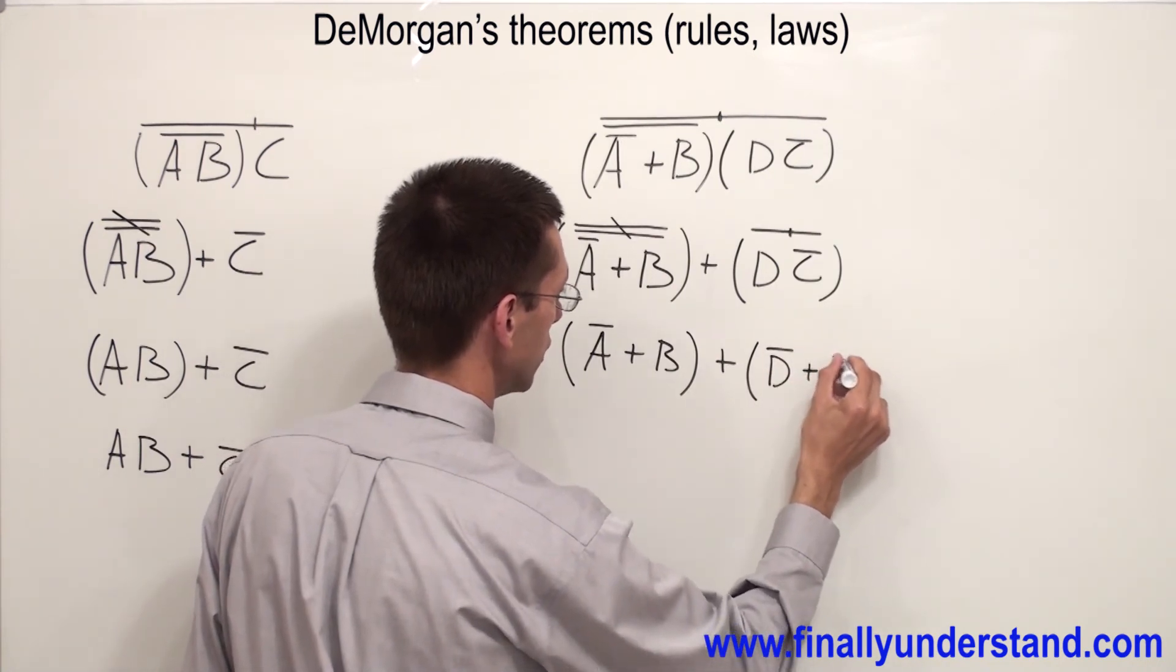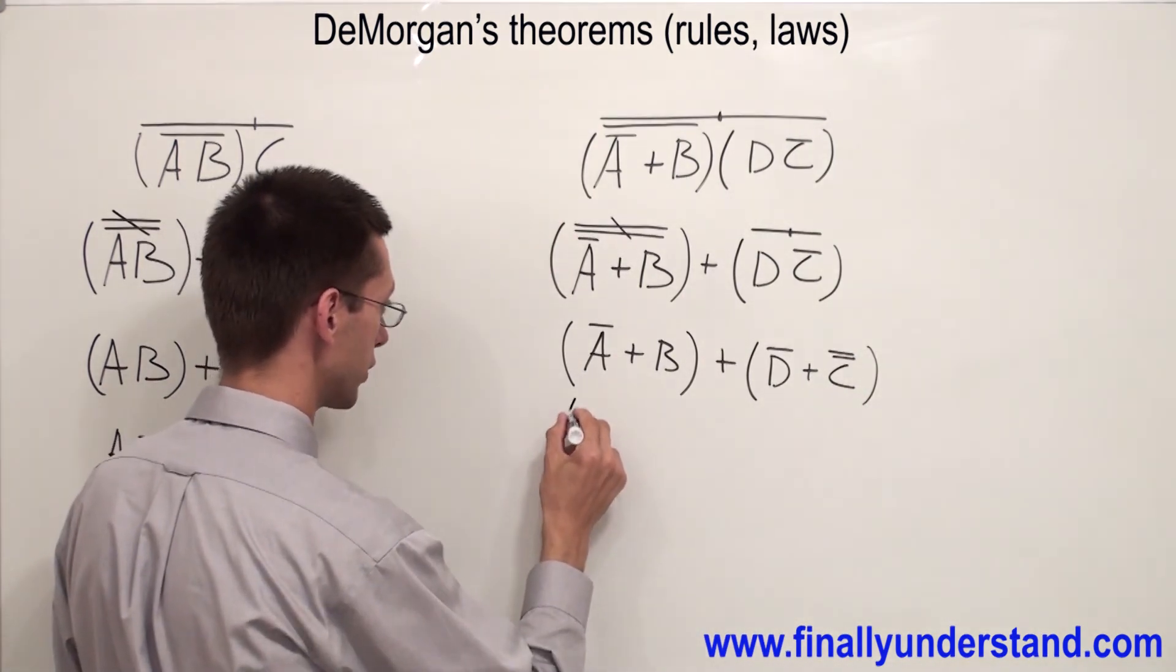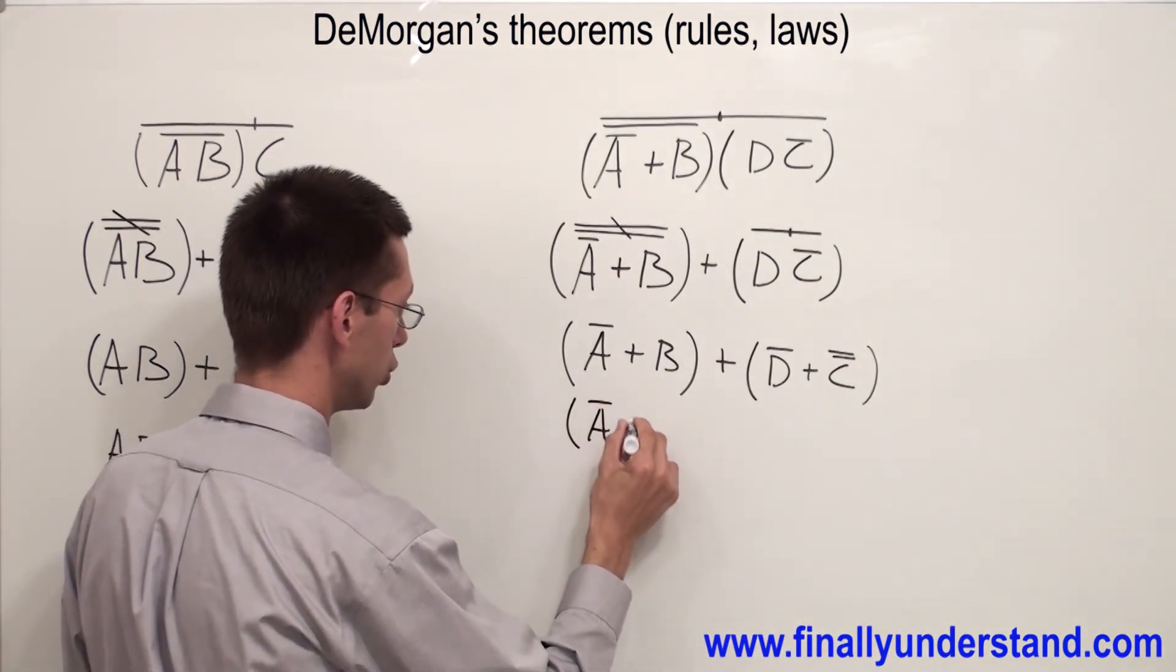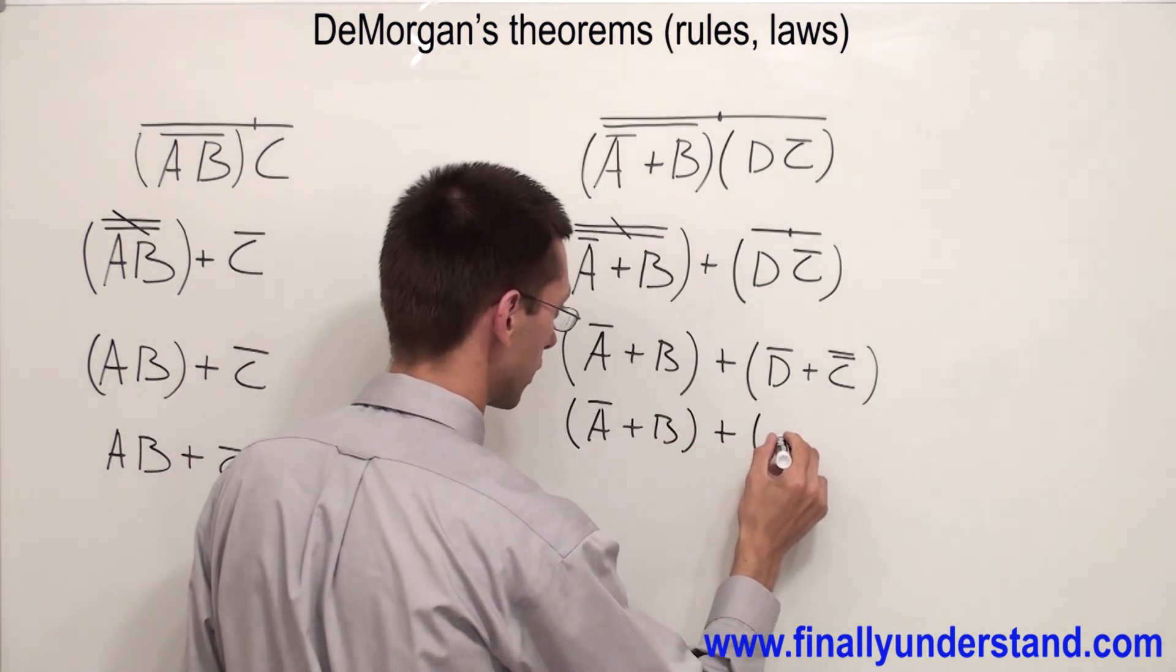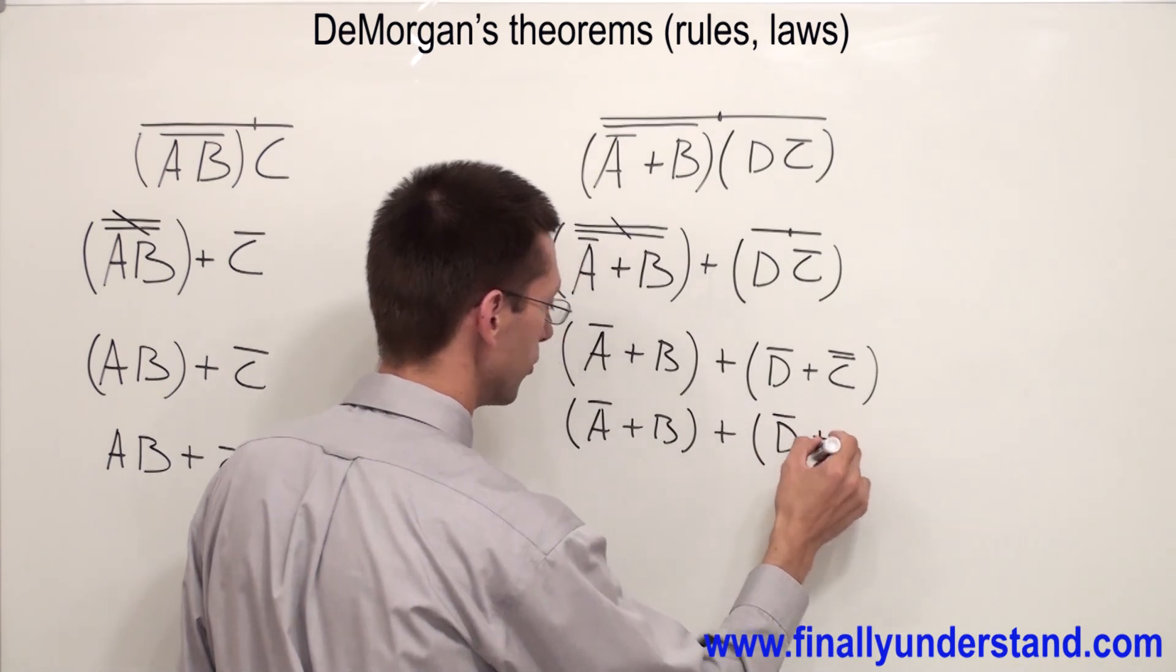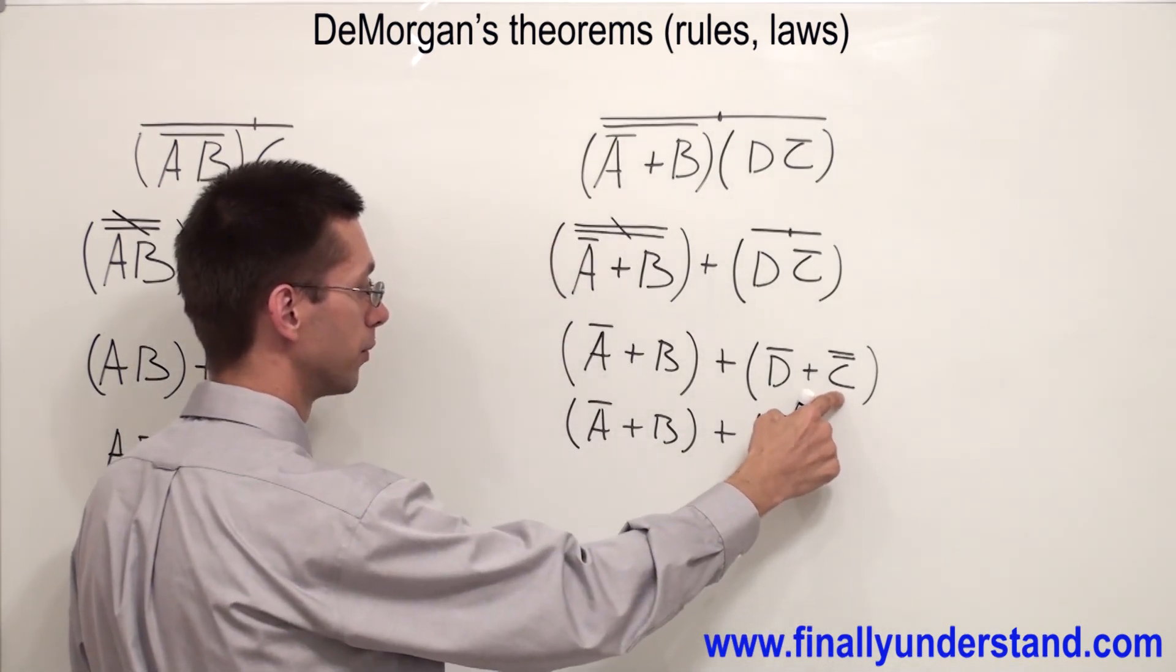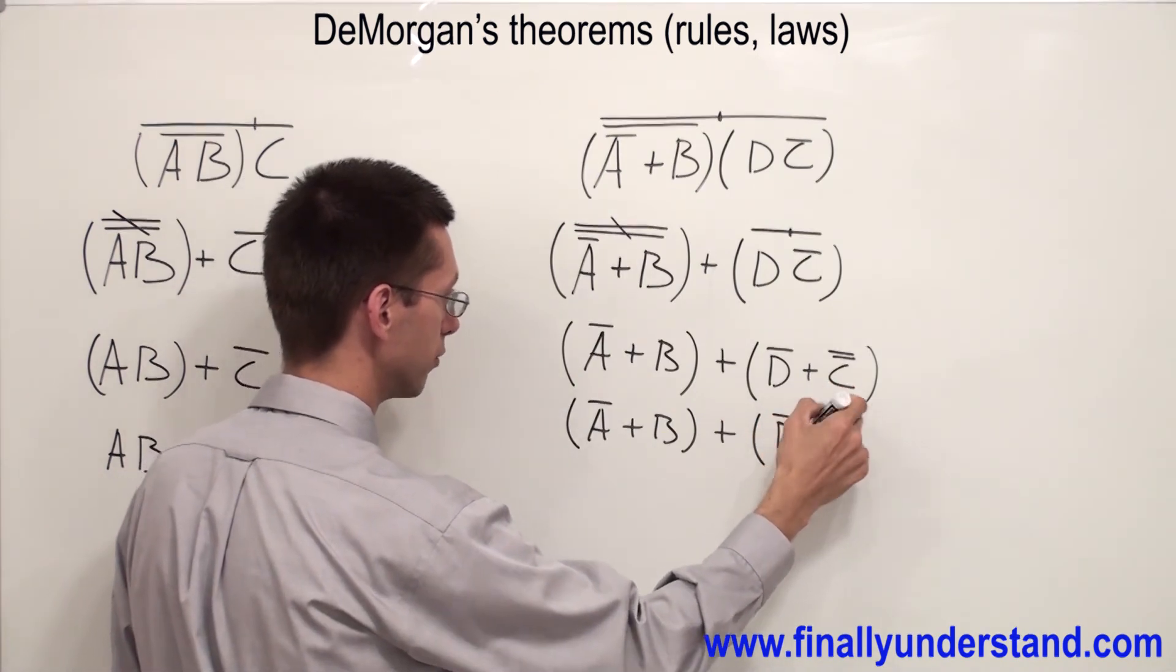Let me rewrite this expression. I'm going to have A̅ OR B OR D̅ OR, remember any variable or term inverted twice is going to give me always the same variable.